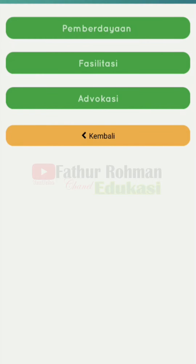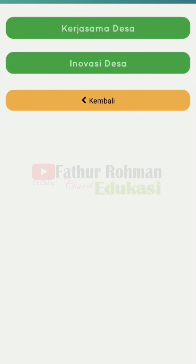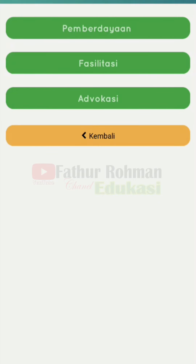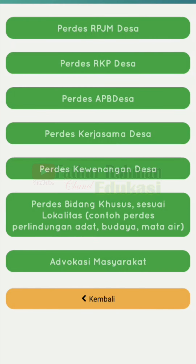Kemudian di menu fasilitasi, ada kerja sama desa dan renovasi desa. Sudah ada renovasi desa. Kemudian di menu advokasi, ini ada perdes RPJMDES, perdes RKPDES, ada perdes APDES, ada perdes kerja sama desa, ada perdes kewenangan desa, ada perdes khusus sesuai lokalitas. Contohnya perdes perlindungan dan daya mata air, kemudian advokasi masyarakat.